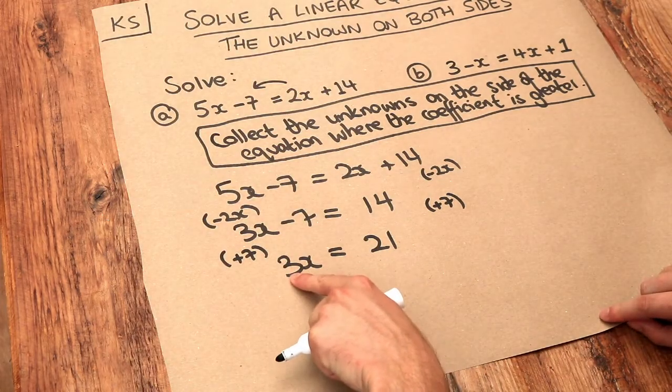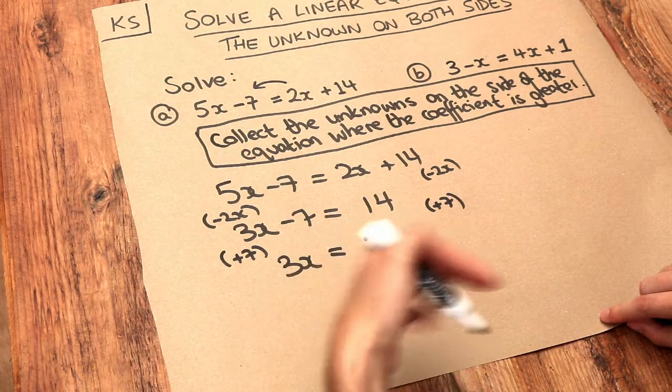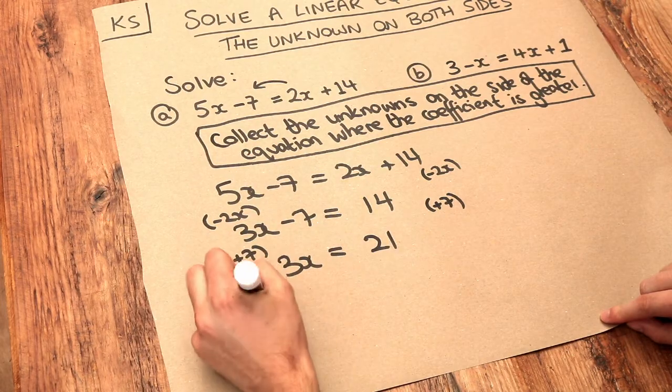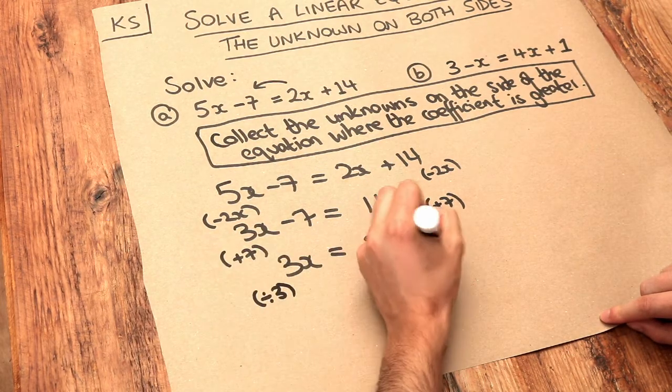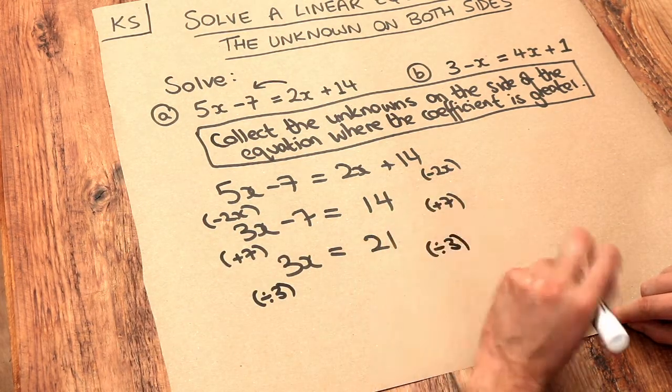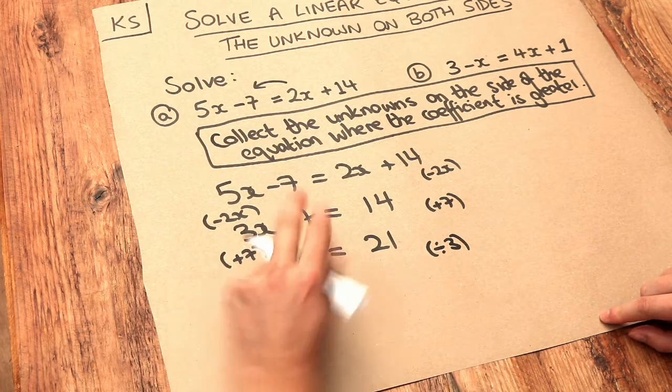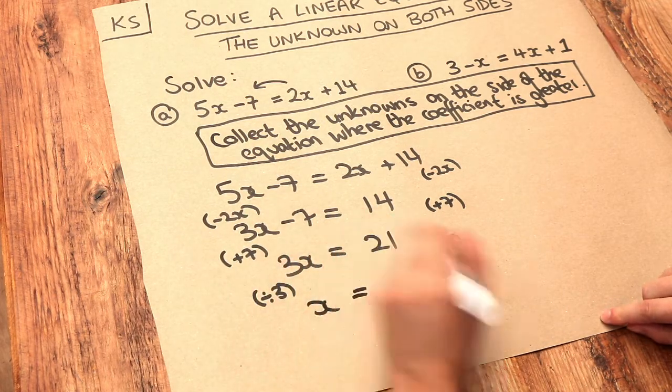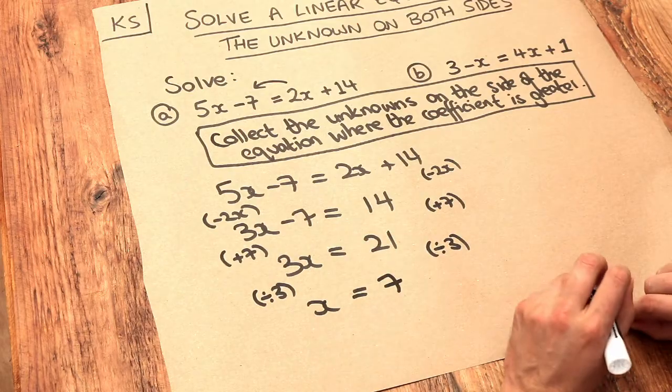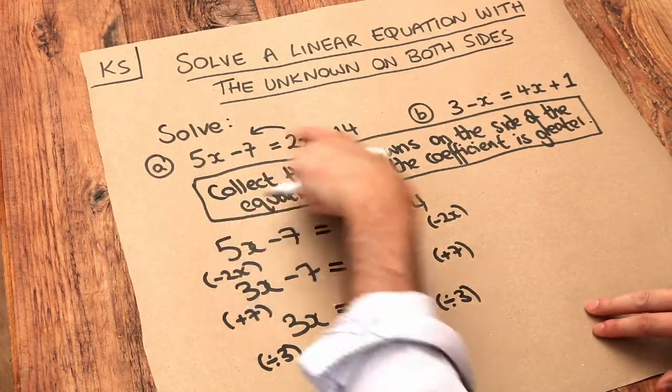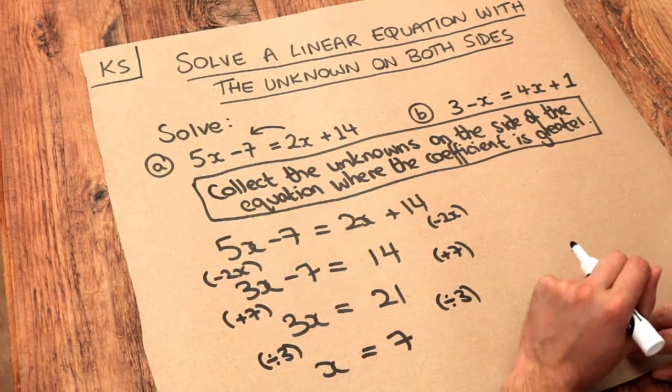And finally, while X was multiplied by 3, we want to get rid of that multiplied by 3, so we divide both sides by 3. We do the reverse. And then that just gets rid of that 3, leaving X. And 21 divided by 3 is 7. And you could substitute that 7 into the original equation to check that it works.